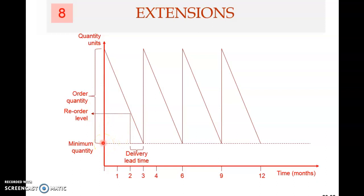You don't order at time zero. There is a reorder level due to the delivery lead time. If there is no delivery lead time, then your reorder point is zero — under the basic model, the reorder point is zero, meaning when your inventory level drops to zero, then only you order, with the assumption that you will receive the order immediately. So with this extension, we relax that assumption. We know that there is a delivery time, and therefore you need to order earlier.